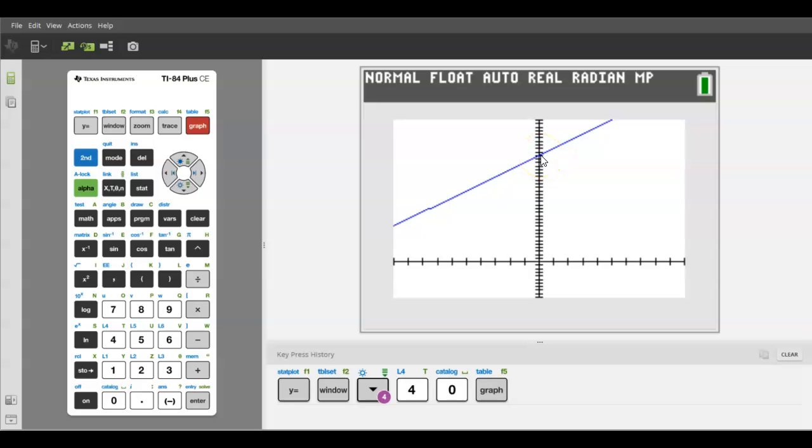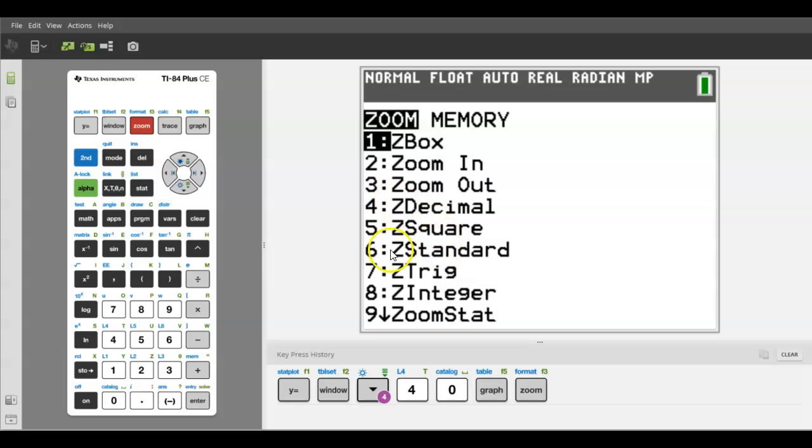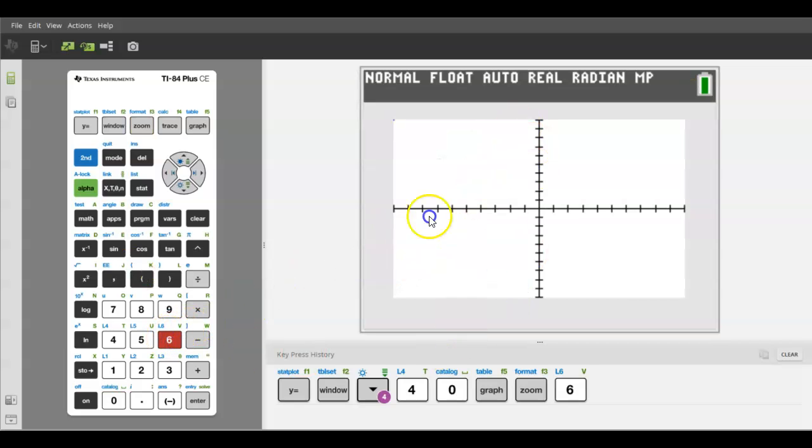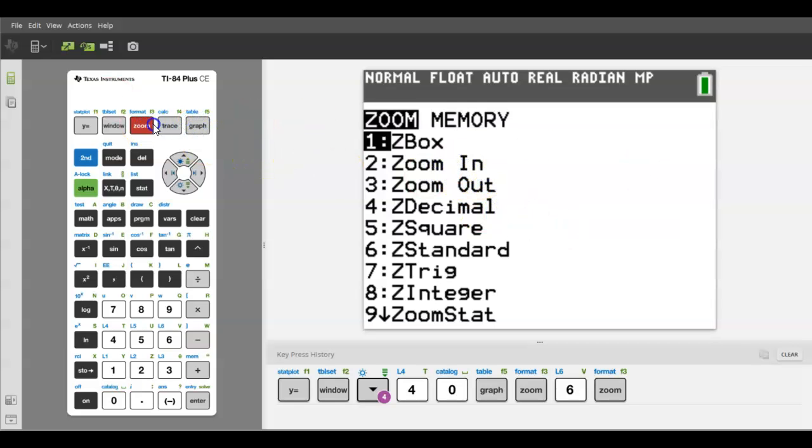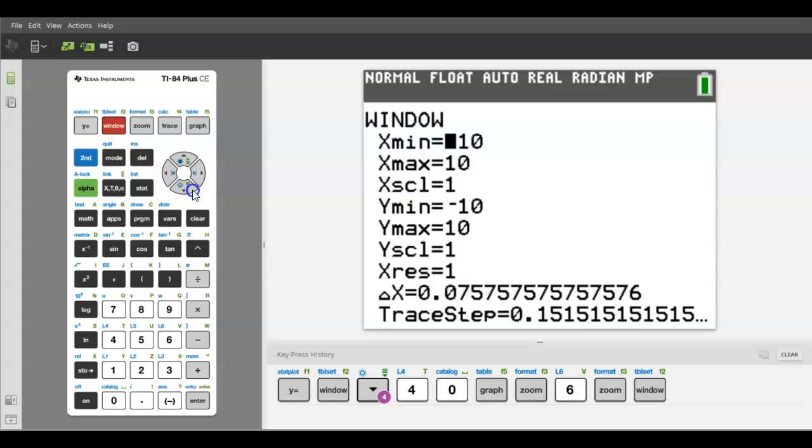That's what the window is for. If your window looks funky and you want to put it back to normal, go to zoom and then standard. It'll reset it back to the 10, 10, 10, 10.